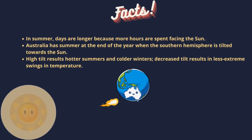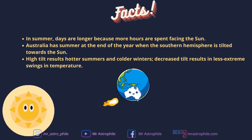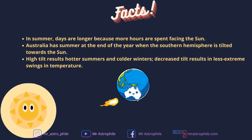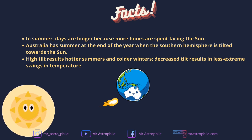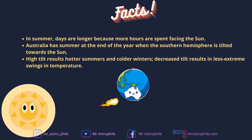Here comes our favorite part — time to know a few facts. In summer, days are longer because more hours are spent facing the Sun. Australia has summer at the end of the year when the southern hemisphere is tilted towards the Sun. Higher tilt results in hotter summers and colder winters, while decreased tilt results in less extreme swings in temperature.